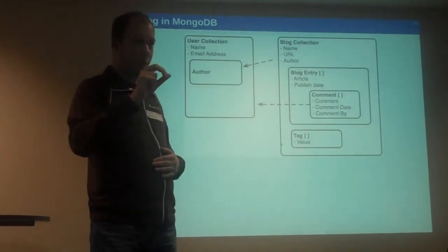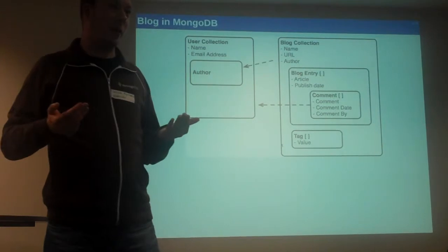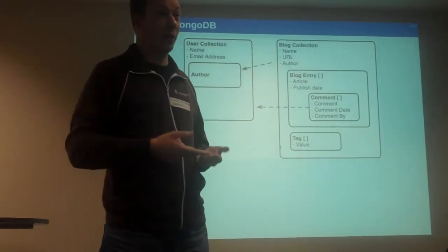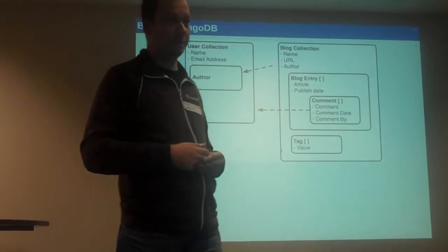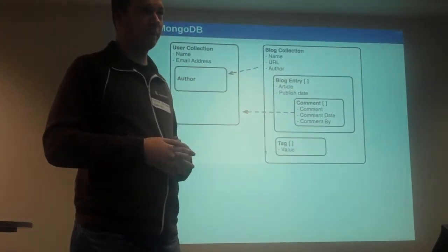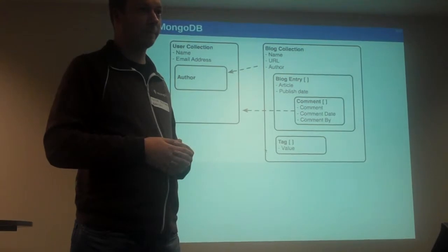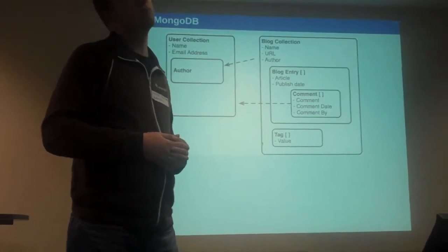So there's no joins, but even in, for example, MySQL, sometimes doing two queries is faster than a join. And that is the approach here, you do two queries. So here you would pull up a blog collection with an author ID1 and then look for a user collection for author ID1? Yes.